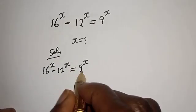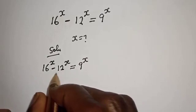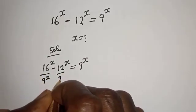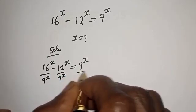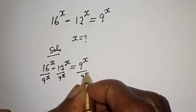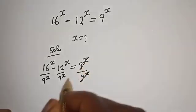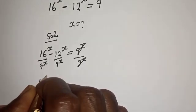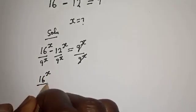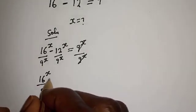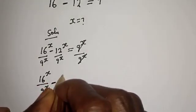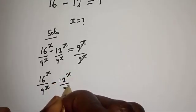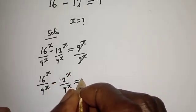Let's divide both sides of this equation by 9 raised to power x. This divided by 9 raised to power x, divided by 9 raised to power x, divided by 9 raised to power x. This will cancel this. And here is 16 raised to power x divided by 9 raised to power x minus 12 raised to power x divided by 9 raised to power x is equal to 1.